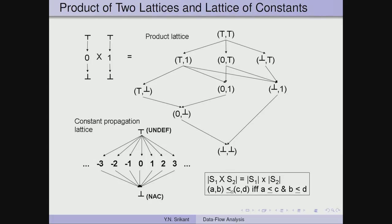For example, 0 is less than top and bottom is less than 0; 1 is less than top and bottom is less than 1 — these are the partial order relations. Using this definition, we enumerate all possible values from (top, top) to (bottom, bottom) and draw the product lattice showing all partial order relationships. For a large number of variables, taking a product of all these lattices is the lattice we consider for constant propagation.